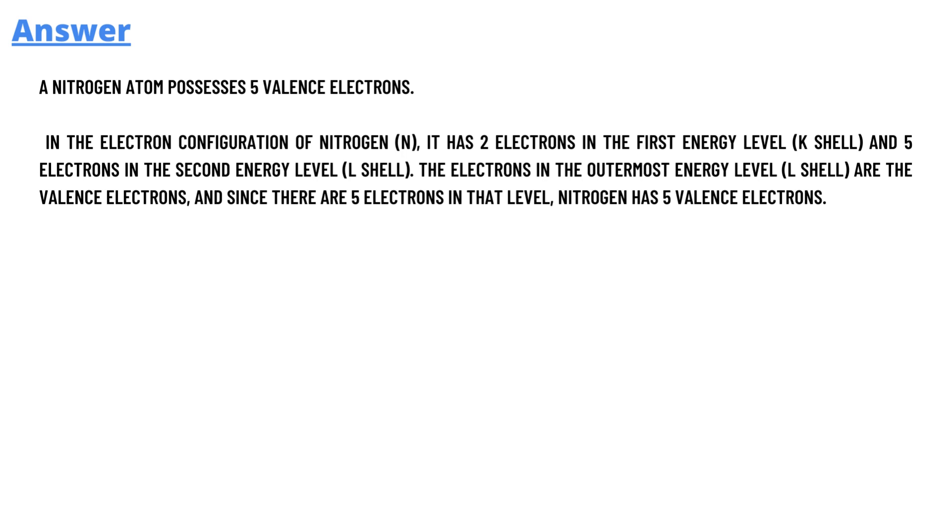The electrons in the outermost energy level are the valence electrons, and since there are 5 electrons in that level, nitrogen has 5 valence electrons. So that's the answer.